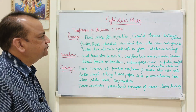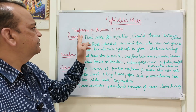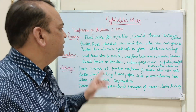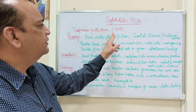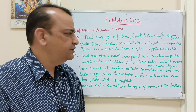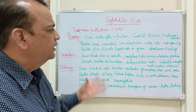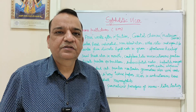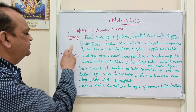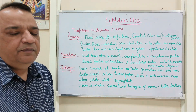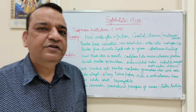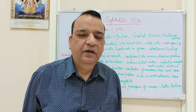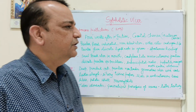Syphilis is caused by Treponema pallidum, an organism, and it is a sexually transmitted disease. It essentially has 3 stages — primary, secondary, and tertiary — and the manifestations, symptoms, and signs are different in almost all the stages.